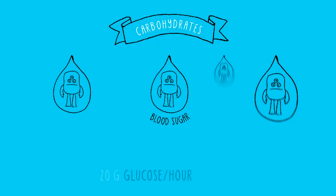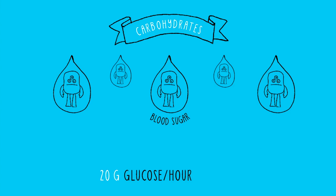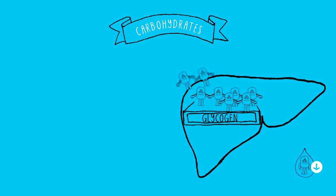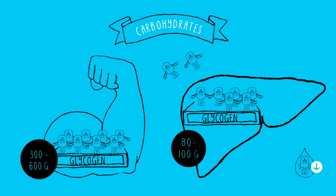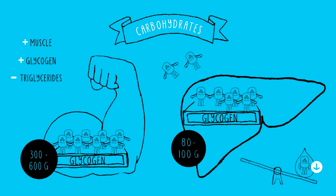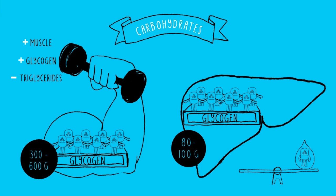Carbohydrates are responsible for regulating our blood sugar. Our body can move about 20 grams of glucose through our blood every hour, which is the equivalent of a piece of fruit. If your blood sugar drops too low, your body will take some of the 80 to 100 grams of stored glycogen to help raise your blood sugar again. Your muscles can also store 300 to 600 grams of glycogen depending on how much muscle you have. The more muscle you have, the more your body stores carbohydrates as glycogen, and the less likely it will be stored as triglycerides or affect your blood sugar negatively. This means weight training is a crucial part of managing blood sugar and triglyceride levels.